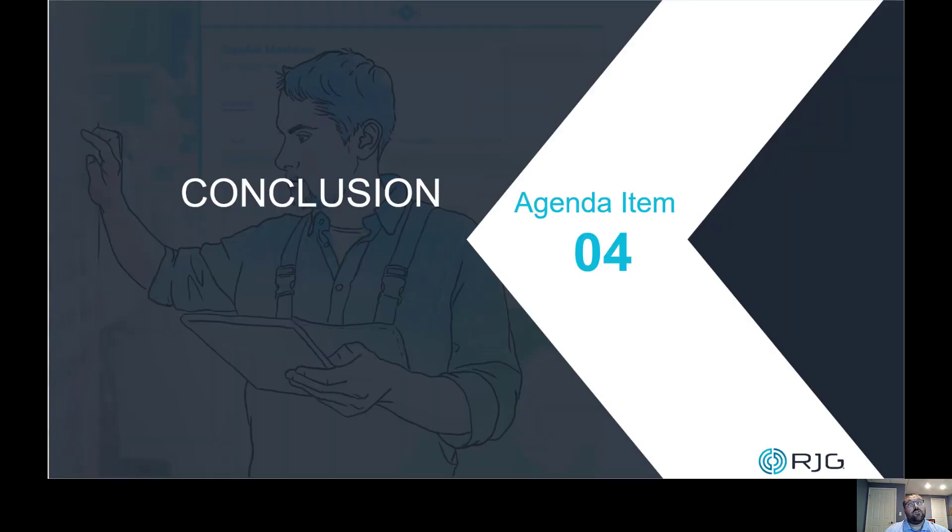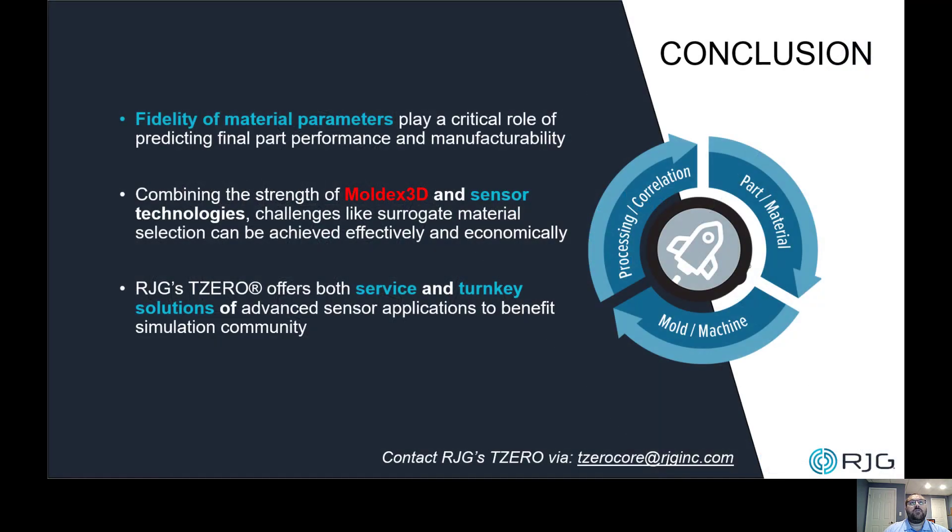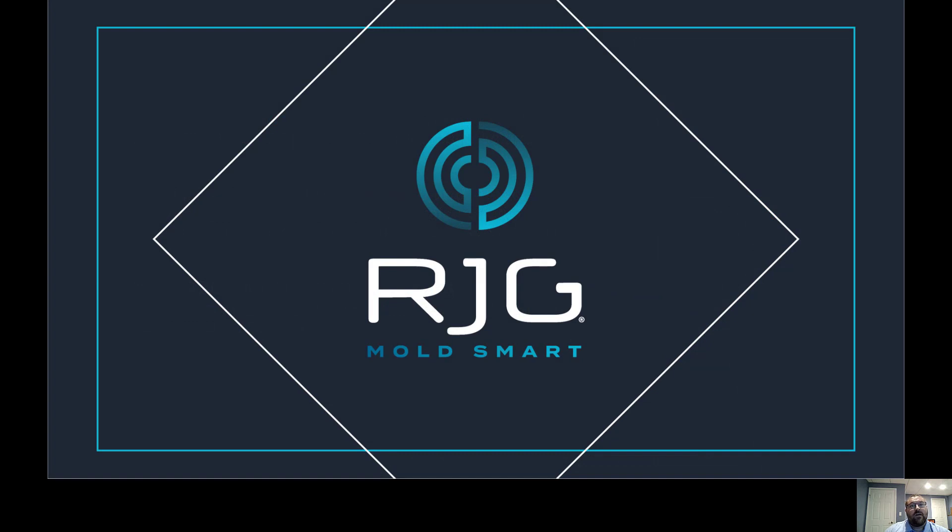Agenda item number four, conclusion. Fidelity material parameters plays a critical role of predicting final part performance in manufacturability. Combining the strength of mold X3D and simulation technologies, challenges like surrogate material selection can be achieved effectively and economically. RJG's T0 offers both service and turnkey solutions of advanced sensor applications to benefit the simulation community. Please contact RJG T0 at t0core at rjginc.com. This concludes my presentation today, and I appreciate everyone's attentiveness. Thank you for your time.